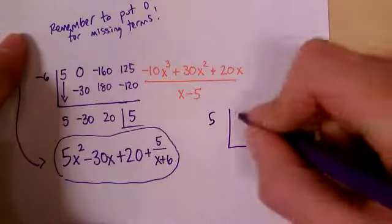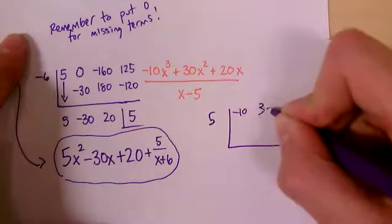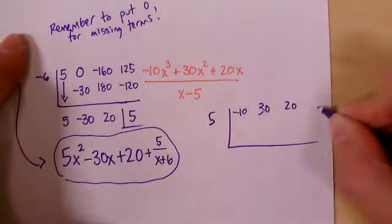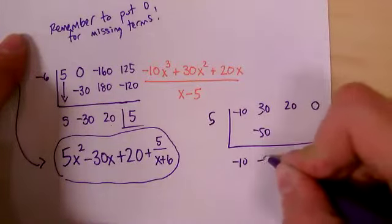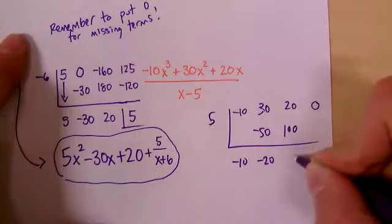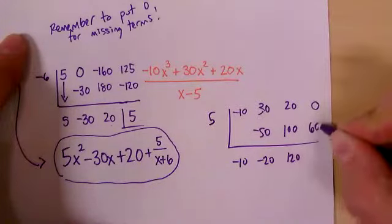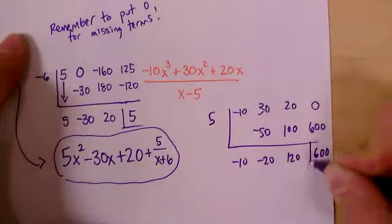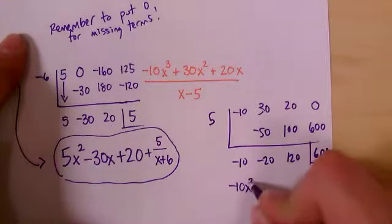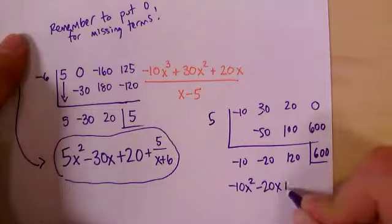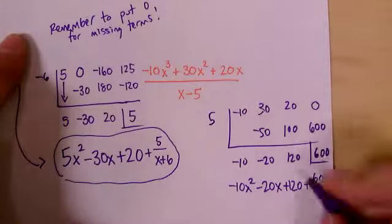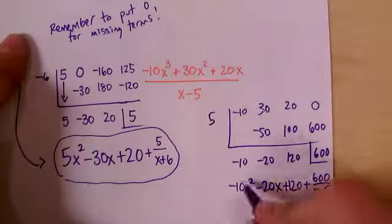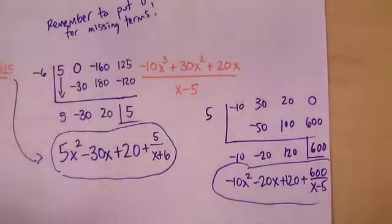So let me go really fast. We had a negative 10, 30, 20, and then there's no constant term, so you'd have a zero there. Drag this down, and just go through the steps that you guys get pretty good at after a while. It looks like you would have this as your setup. So we got -10x²-20x+120, and it's going to be plus 600 over the thing we divided by, which is x-5. So that is going to be our final answer.